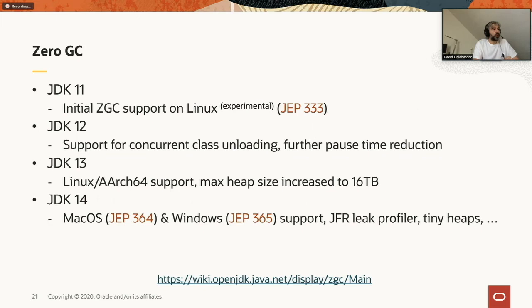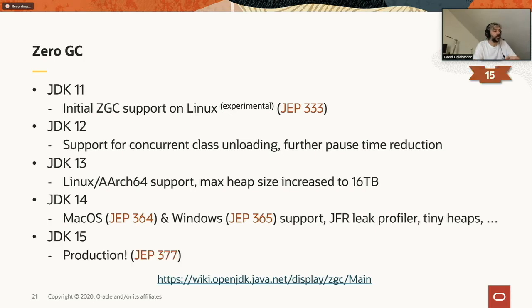To use ZGC today, since it was added as an experimental feature in Java 11, you need to explicitly unlock it with the flag -XX:+UnlockExperimentalVMOptions, then use -XX:+UseZGC to switch from G1 (the default GC) to ZGC. To tune ZGC, you really just need to set the heap size — one of ZGC's design goals was to provide good default behavior without extensive tuning. The plan is to make ZGC a production feature in JDK 15 by removing the experimental flag.